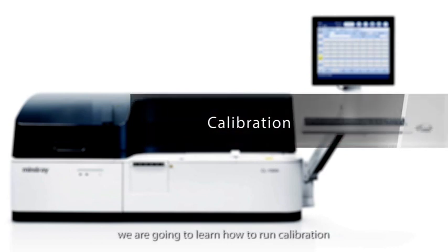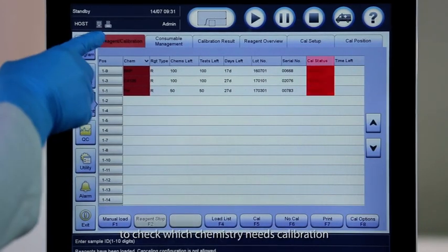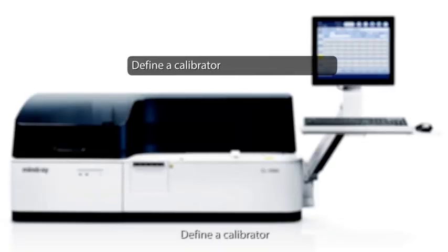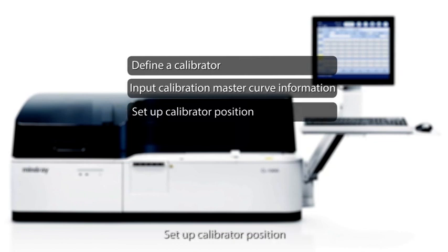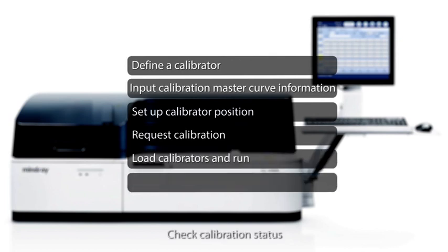Moving on, we are going to learn how to run calibration. You can go to the reagent calibration page to check which chemistry needs calibration. If you run a calibration, you can perform in the following order: Define a calibrator, input calibration master curve information, set up calibrator position, request calibration, load calibrators and run, and check calibration status.